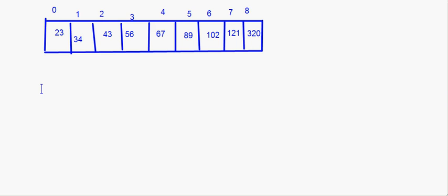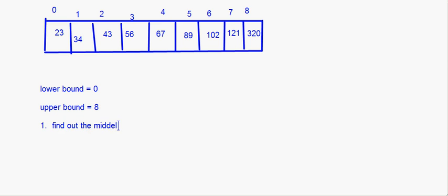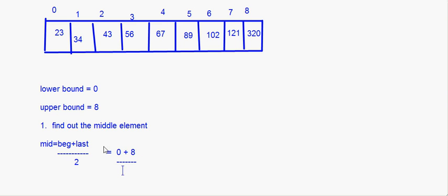Now what is the lower bound of this array? The lower bound is 0 and the upper bound is 8. The first thing you have to do in binary search is find out the middle element. The middle element = (beginning + last) / 2. Here beginning is the lower bound and last is the upper bound, so this is (0 + 8) / 2 = 4. So 4 is the middle element.